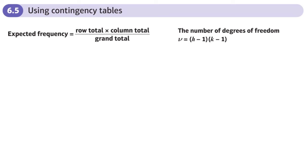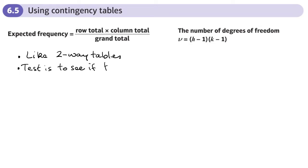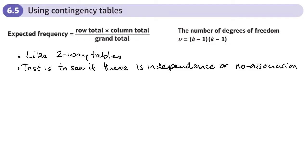This is the fifth section of the chi-squared tests chapter and here we're going to be looking at contingency tables. This is basically like two-way tables, and the test we are doing is to see if there is independence or no association between the two sets of data.